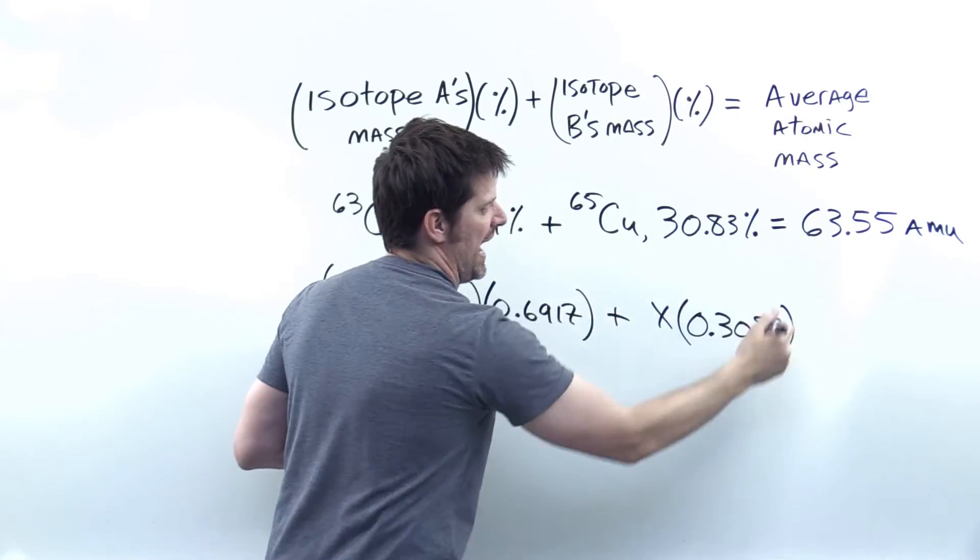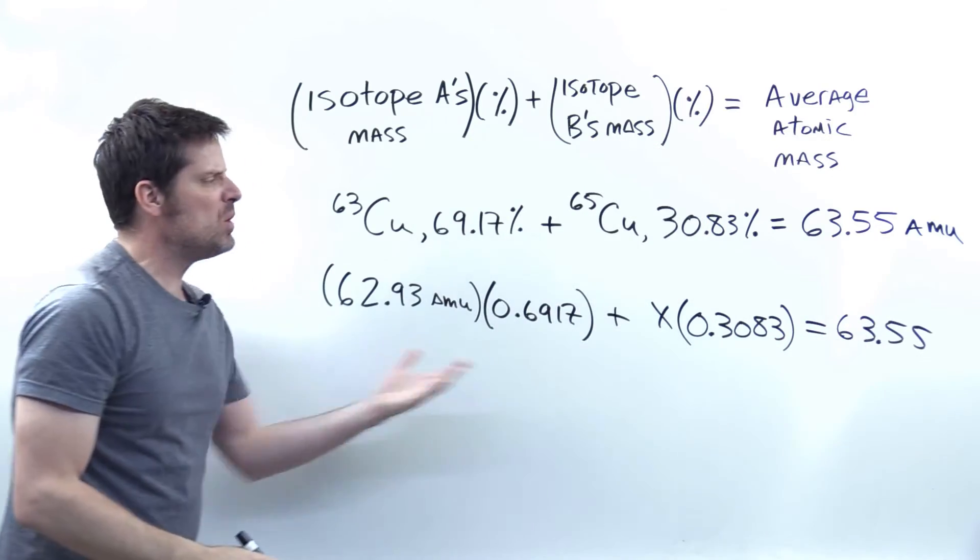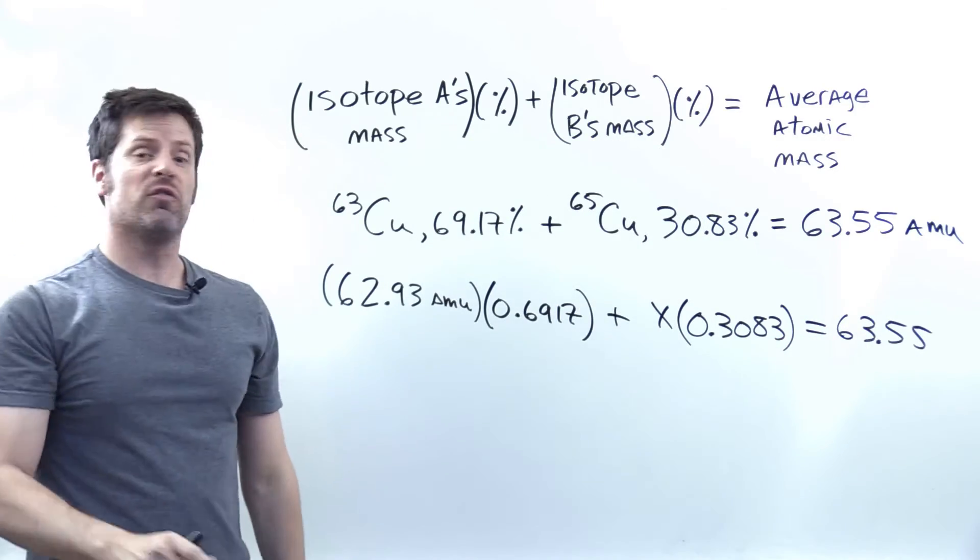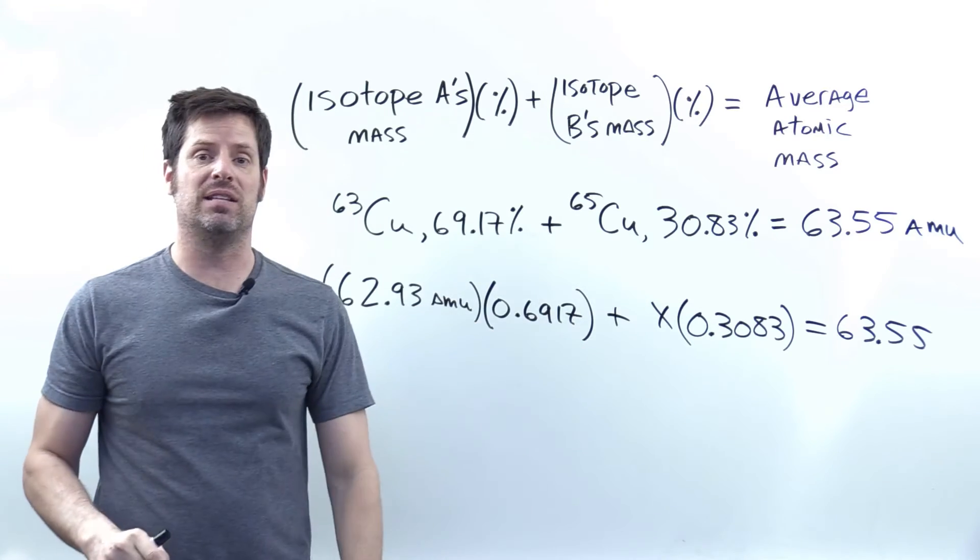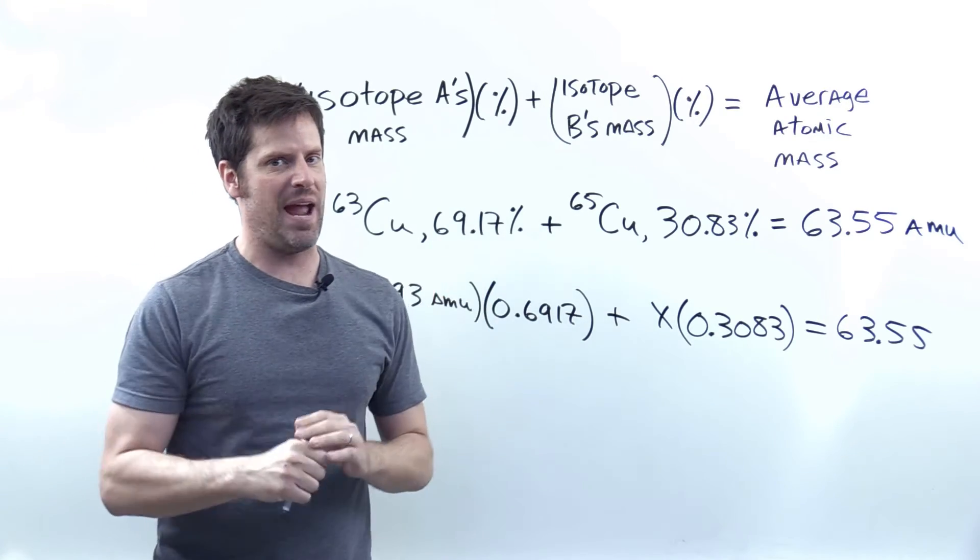and then set it equal to the final AMUs over here, then I've got a beautiful equation. I'm trying to solve for the mysterious mass of copper 65, which is going to be that X term right there. From this point forward, we just do some algebra.